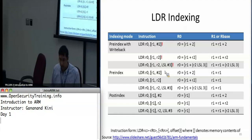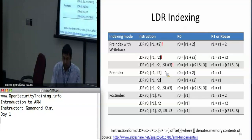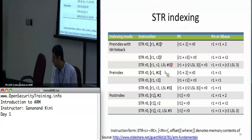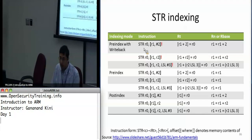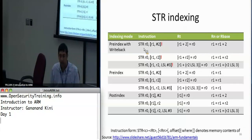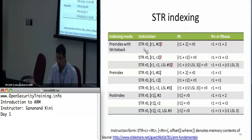Post-index does the same thing as pre-index with writeback, but here you specify the offset outside the square brackets followed by a comma. Now the store is the same thing, except we're going the other way — taking the register value in R0 and storing it at the address calculated based on the base address register and the offset. It's just going the other direction, storing values from the register into that memory location.